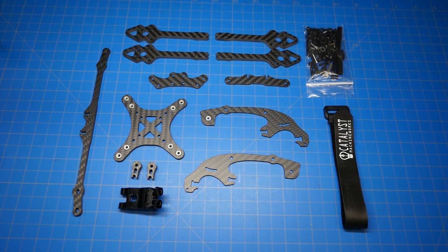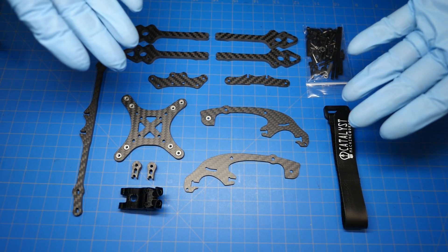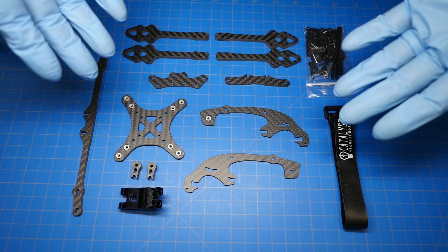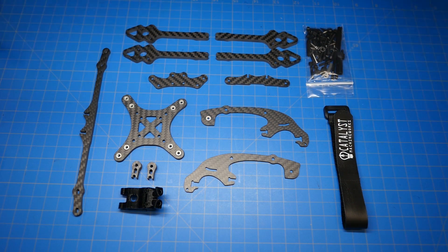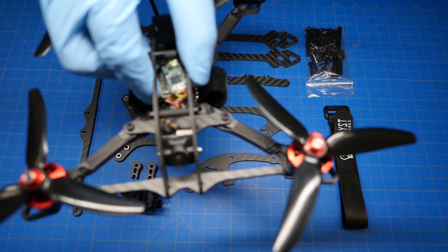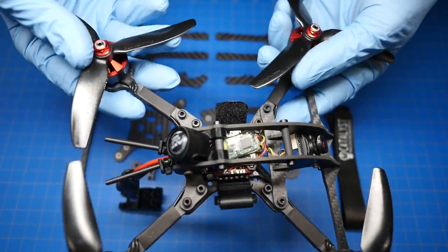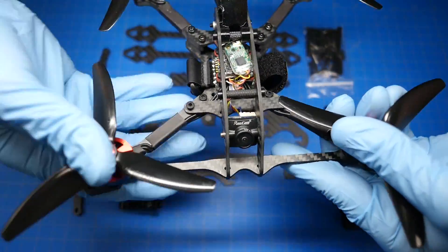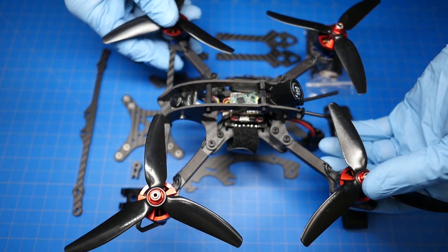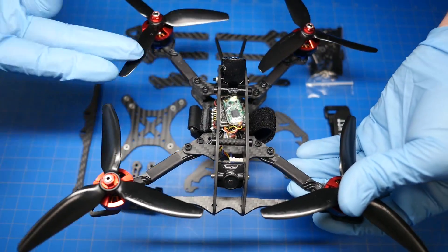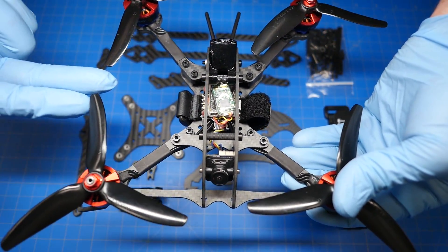Hey guys, this is Neil with Catalyst Machine Works. What are these parts sitting here on the table? Yep, you guessed it, this is the Raging Droner! This is what one looks like. Are you jealous? I've got my Raging Droner in my hands right now. Five inches of awesome right here.